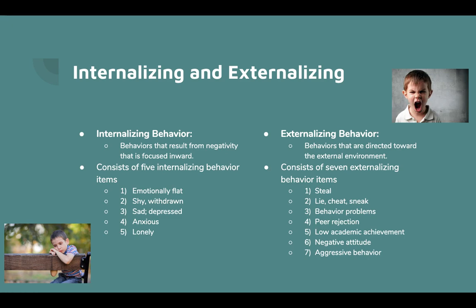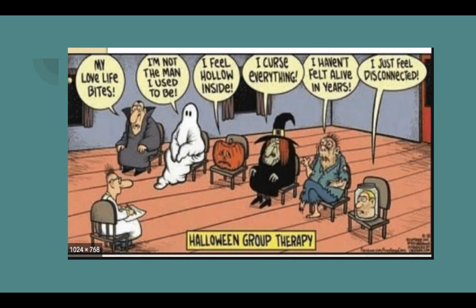Externalizing behaviors are behaviors that are directed toward the external environment. This consists of seven externalizing behavior items: one, steal; two, lie, cheat, sneak; three, behavior problems; four, peer rejection; five, low academic achievement; six, negative attitude; seven, aggressive behavior. Before you start thinking about your students' social-emotional needs, it might be good for you to think about your own needs.